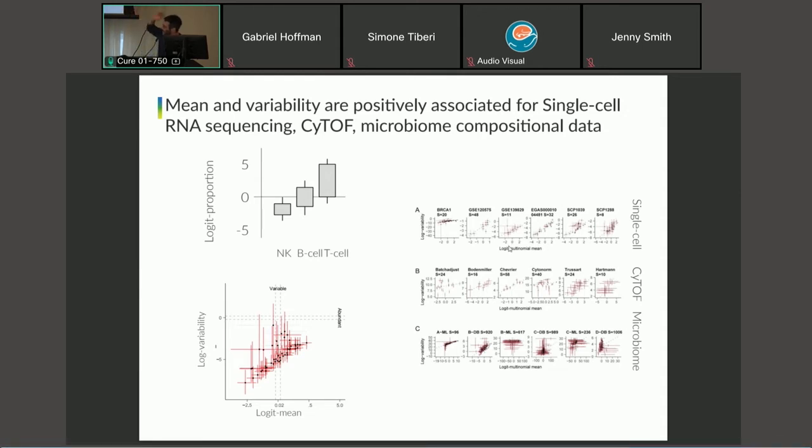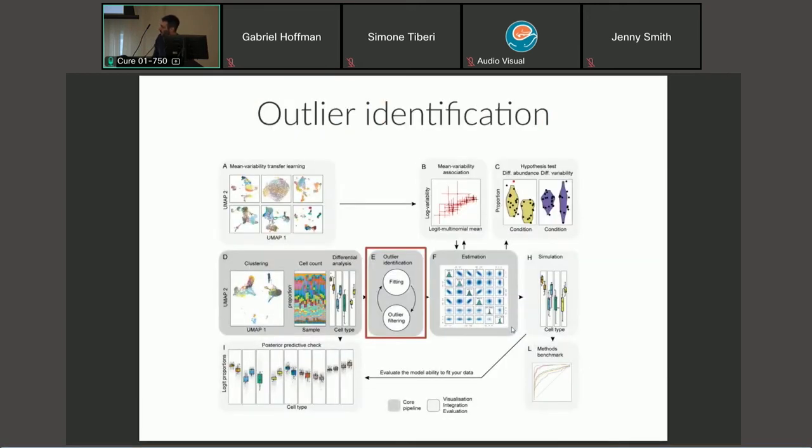We took 18 datasets across technologies—you can see single cell, CyTOF, microbiome—and we modeled them initially being naive on this association. So this association was not in the model. Nonetheless, this association emerged from pretty much all datasets. It's quite ubiquitous also across technologies. We show in the preprint that when we embed this association in the model, we get a shrinkage on the estimates, as was our goal.